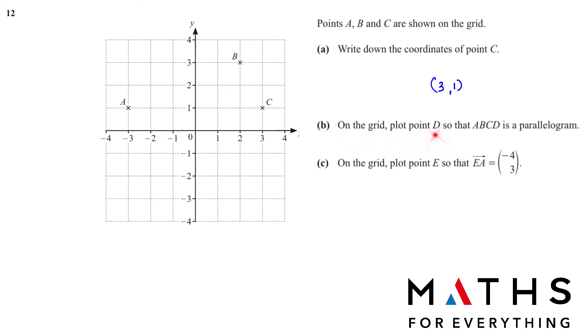12b on the grid plot point D so that A, B, C, D is a parallelogram. We got A, B and C. A parallelogram is a shape where the opposite two sides are parallel to each other. Let's just join the points that we have to understand clearly. So we need D, you can make out that D is going to be somewhere here.